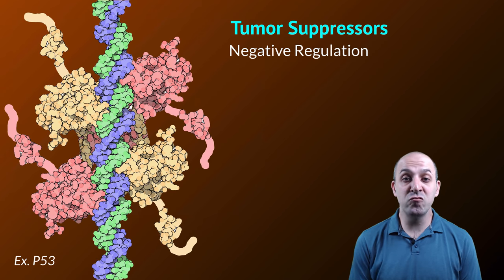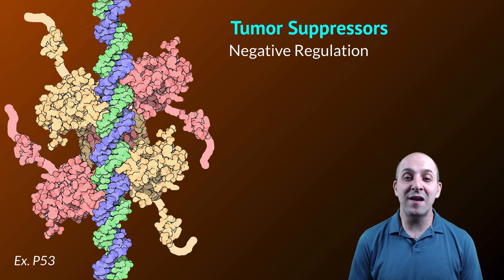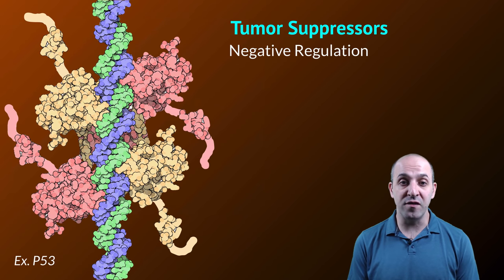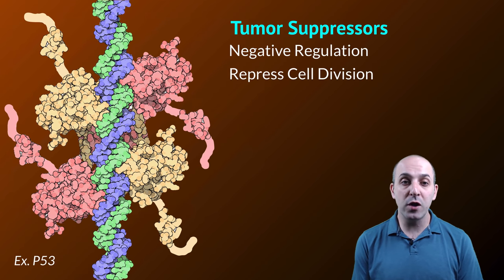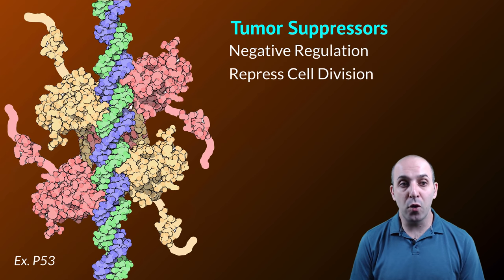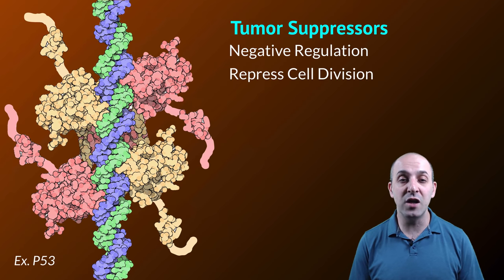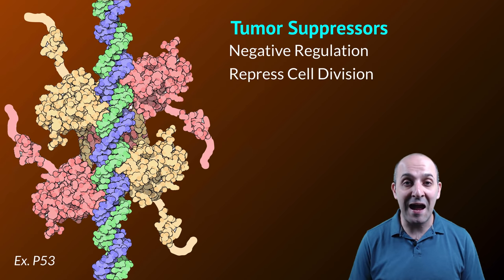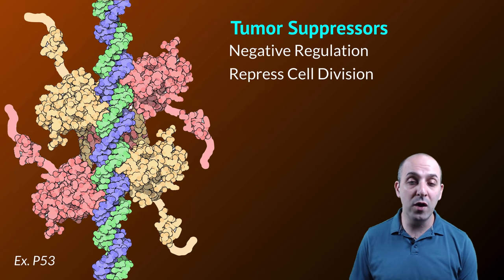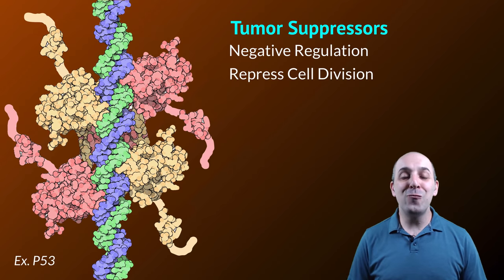On the opposite end of things, we have tumor suppressors. Tumor suppressors have a negative regulatory effect on the cell cycle. In other words, they repress cell division. The example that I'm showing you here is p53. The p53 protein is involved in repressing the expression of a series of other genes that are all involved in progressing the cell through the cell cycle. If p53 is active inside of a cell, the cell will not move through the cycle and it will not divide.